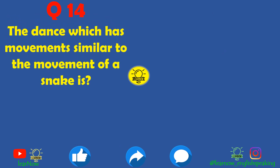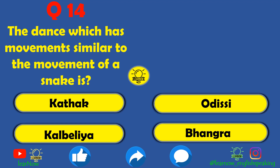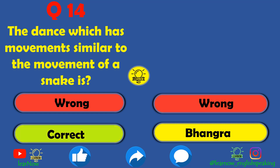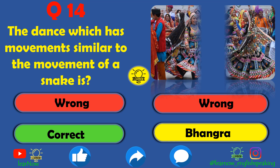Next question: the dance which has movements similar to the movement of a snake is called what? The options are Kathak, Odissi, Kalvelia, or Bhangra. Kathak is wrong, Odissi is wrong. Kalvelia is the correct answer. In the chapter 'Snake Charmer's Story' we learned that the dance with movements similar to a snake is called Kalvelia.